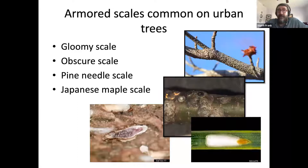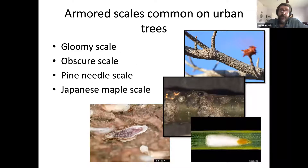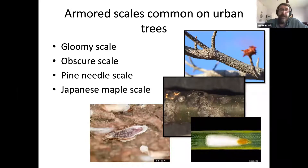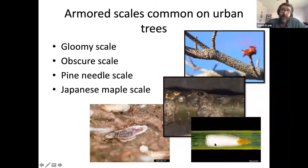There are lots of common scales on urban trees to deal with — some native, some exotic. Learning to identify all of them is a task we can't possibly complete in 45 minutes. So I'm going to give you examples of very common ones you may encounter. If you can tell the difference between armored and soft scales, that'll get you on your way towards management solutions. We'll talk about gloomy scales, obscure scales, pine needle scales, and Japanese maple scales.